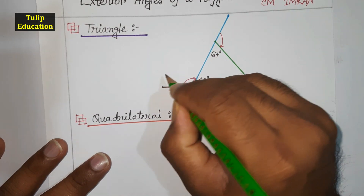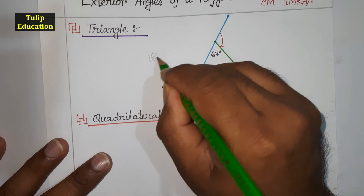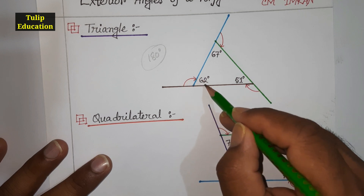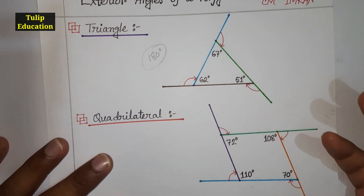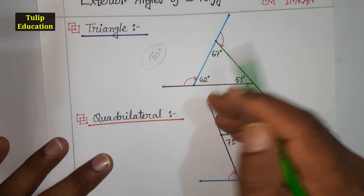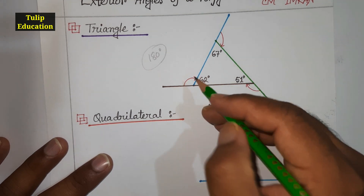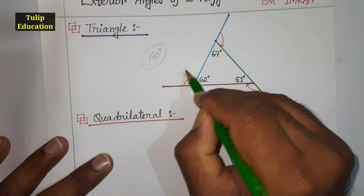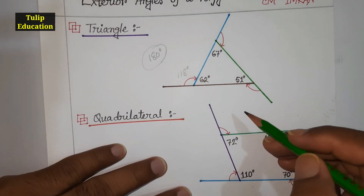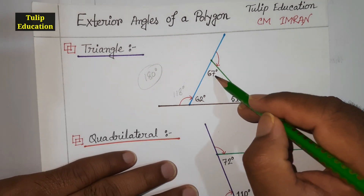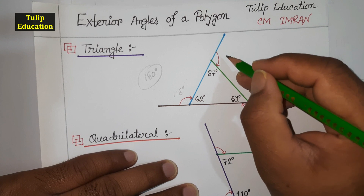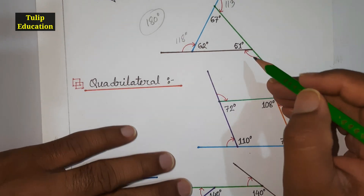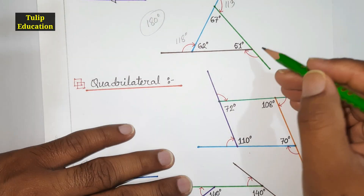Keep in mind: the sum of an exterior angle and its interior angle is 180°. So to find an exterior angle, we subtract the interior angle from 180°. Subtracting 62° from 180° gives an exterior angle of 118°. Subtracting 67° from 180° gives 113°. And subtracting 51° from 180° gives 129°.